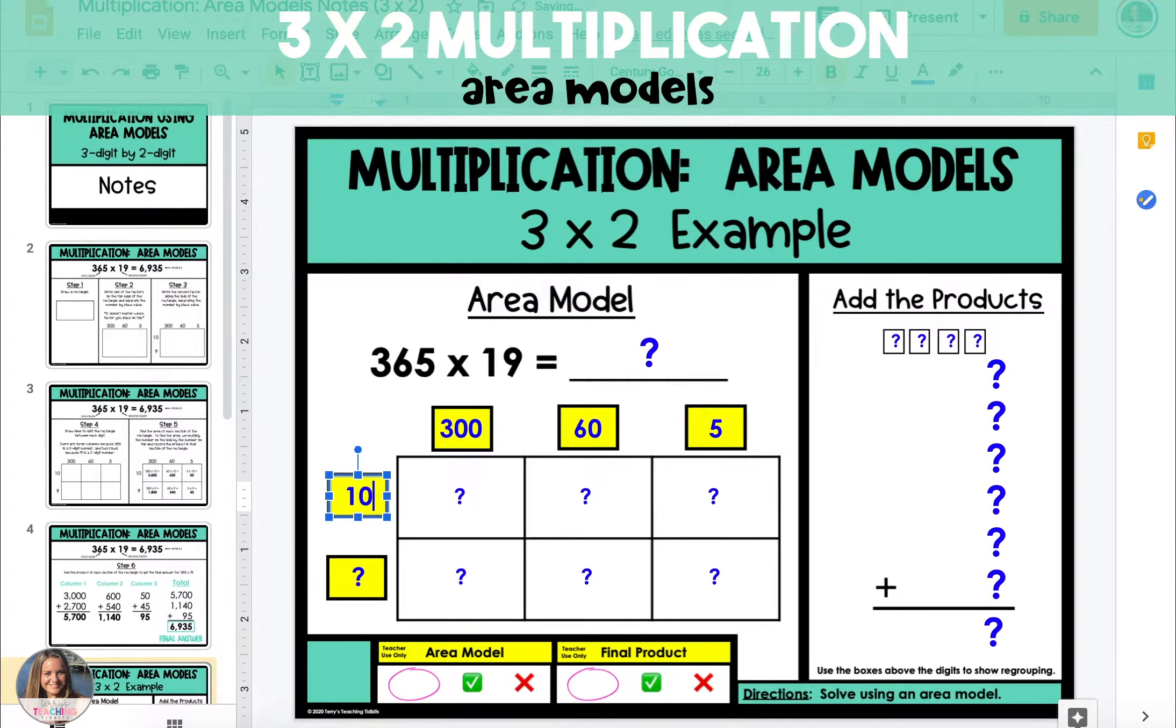Next we'll take the second factor, 19, and separate that by place value which is 10 and 9 and put these digits on the side of the rectangle.